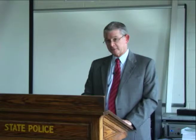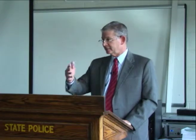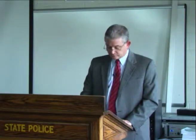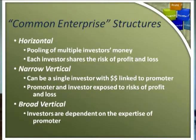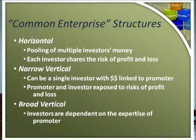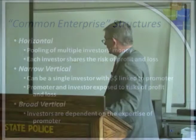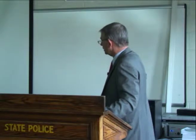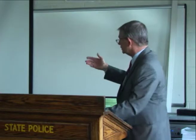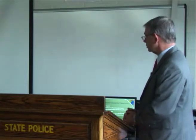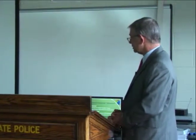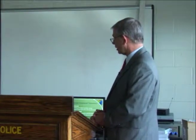It's pretty straightforward. The majority of federal courts have a horizontal structure which they use to evaluate whether something is a common enterprise. In a horizontal structure, there are many investors putting their money in and each investor shares the risk of profit or loss.